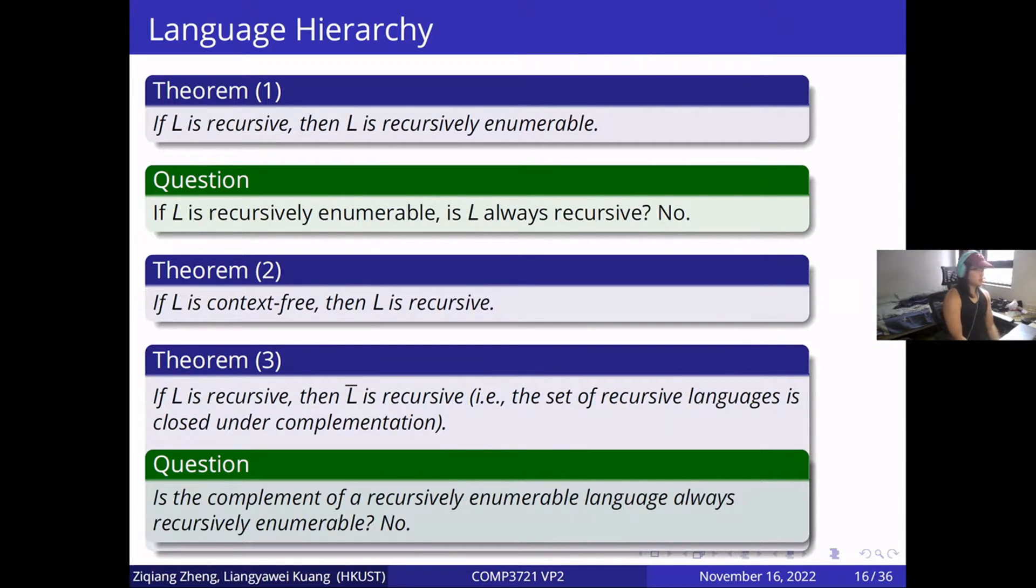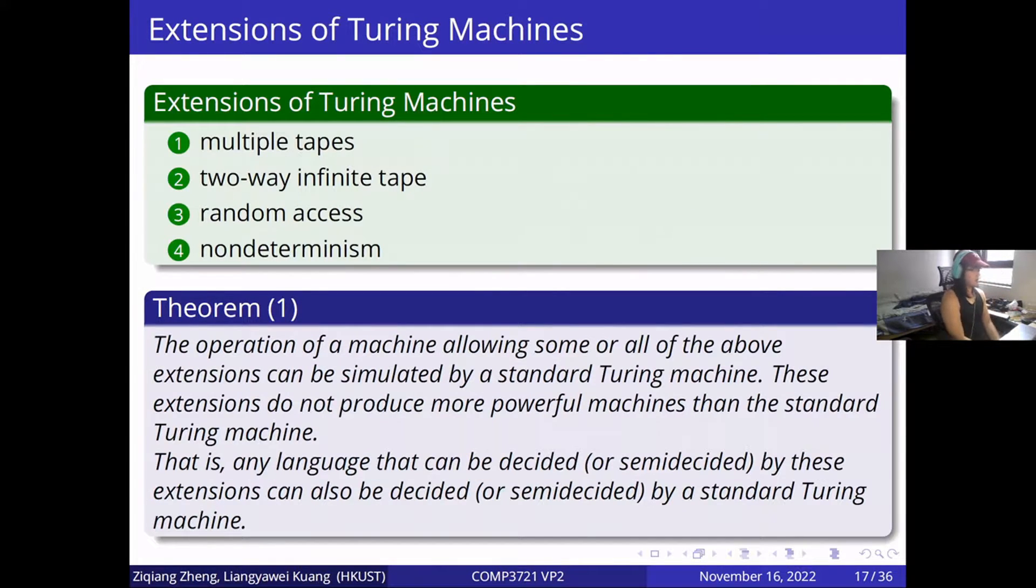Based on what we learn, there should be a language hierarchy so that we could say it's recursive or recursively enumerable. There are many types of Turing machines. In this presentation, we will focus on four of them, including multiple tapes, two-way infinite tape, random access, and non-determinism.